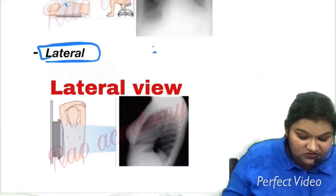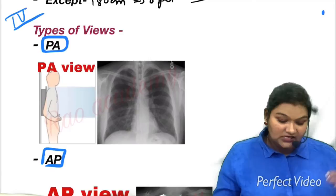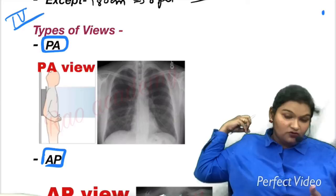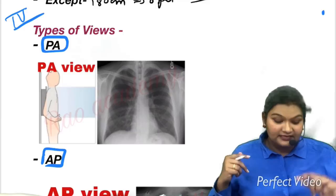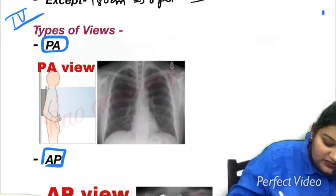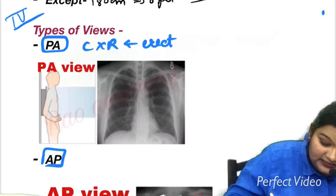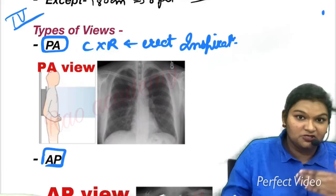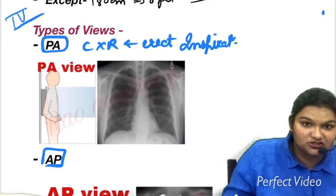In the postero-anterior view, the film is on the anterior side and the source of x-rays is from behind, so x-rays enter the body from posterior to anterior. This postero-anterior view is the preferred view in chest x-ray, where the person should be erect and in inspiration. The erect, inspiration, and PA view is the most preferred view for chest x-rays.